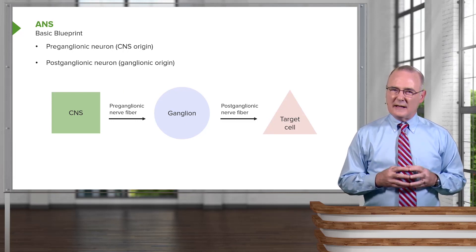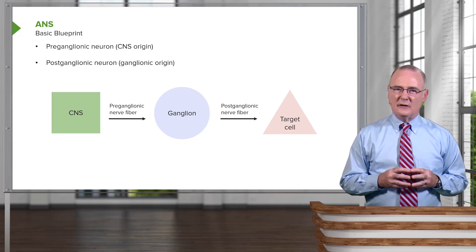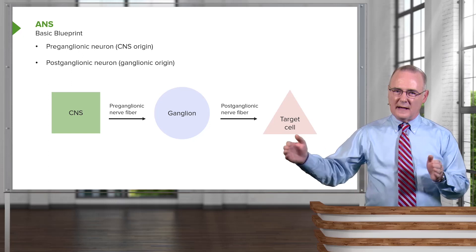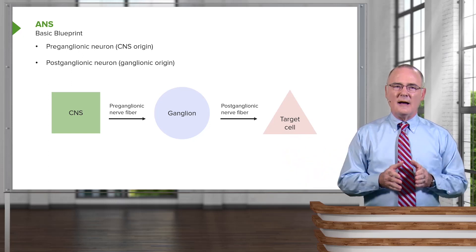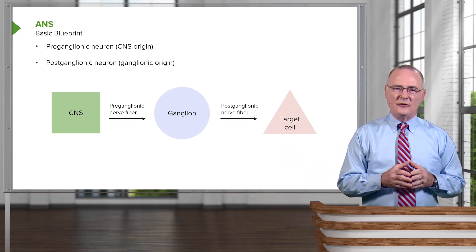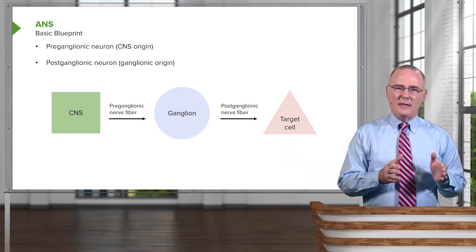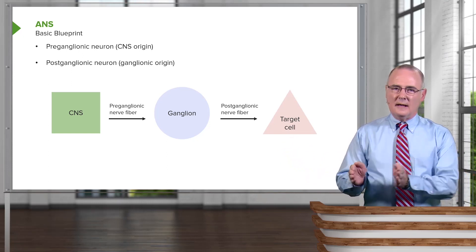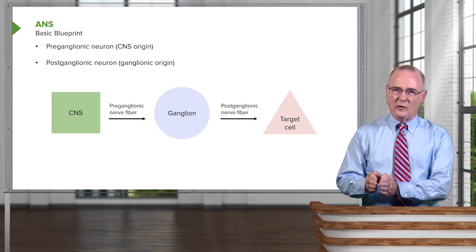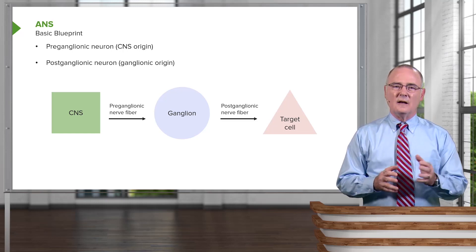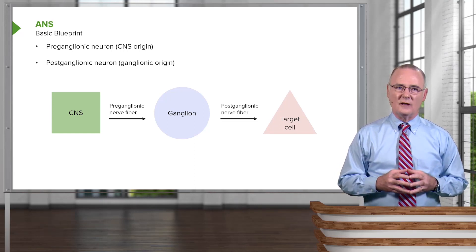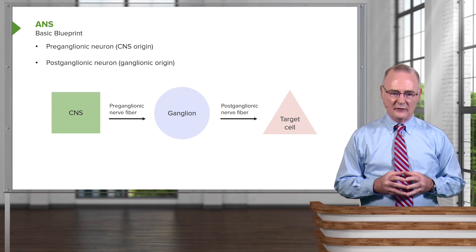In the sympathetic nervous system, preganglionic nerve fibers tend to be short, and postganglionic nerve fibers are long. However, in the parasympathetics, that is different. Preganglionic fibers are long, and in parasympathetics the postganglionic fibers tend to be very, very short, as the ganglia are embedded, in many cases, in the wall of the structure innervated by the parasympathetics.